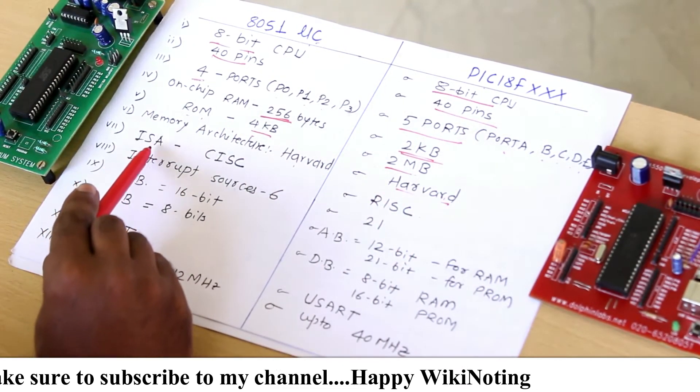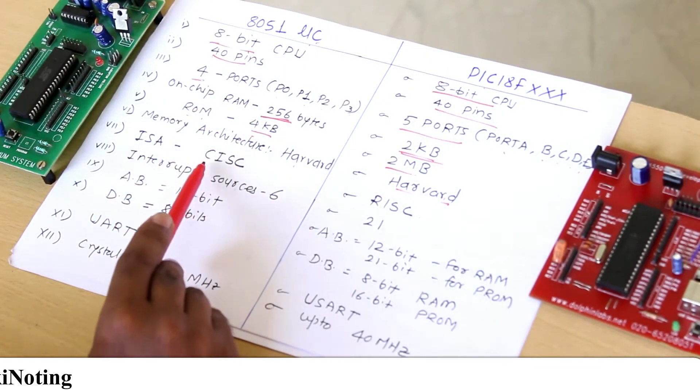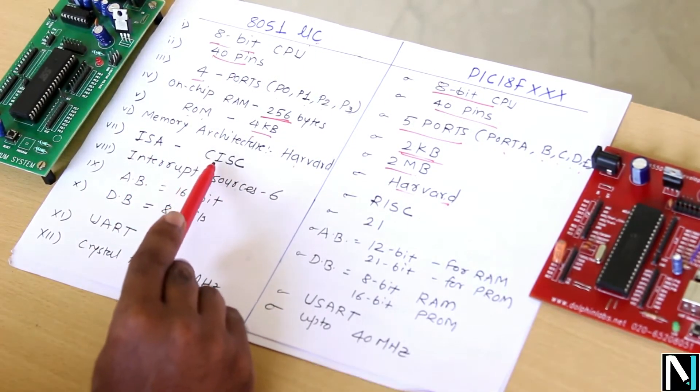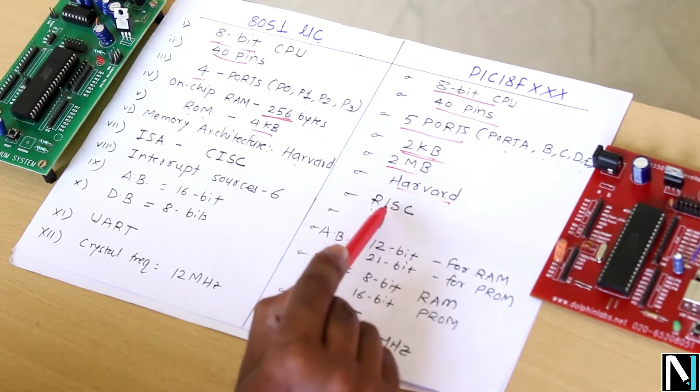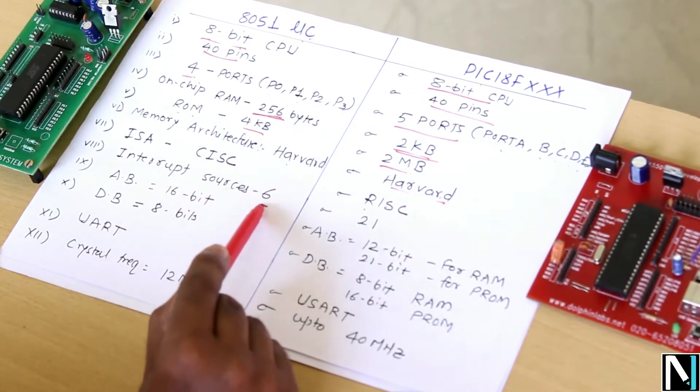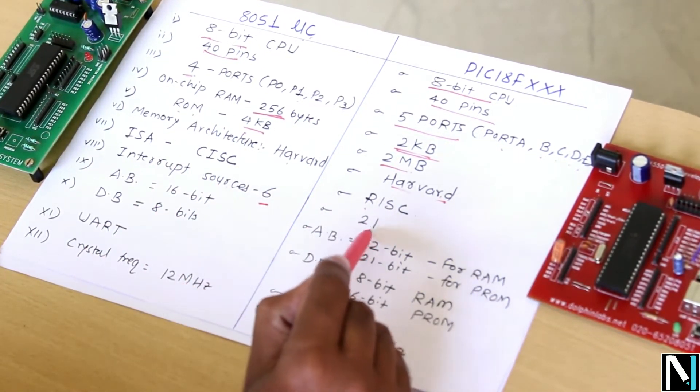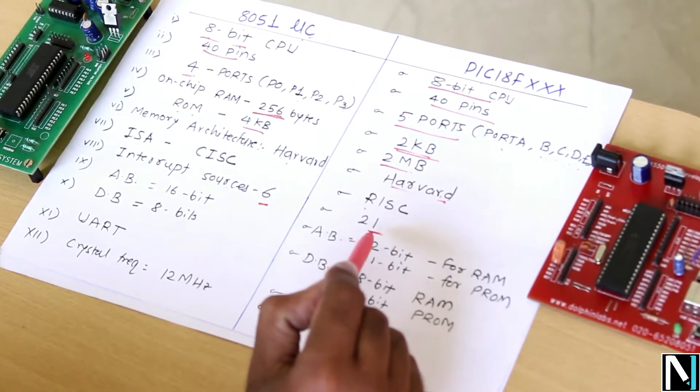The instruction set architecture which is used by 8051 microcontroller is CISC architecture, that is Complex Instruction Set Computer. And in case of PIC 18, it is Reduced Instruction Set Computer. The sources of interrupt are 6 here, while in case of PIC 18 we are having 21 interrupt sources with priorities also.